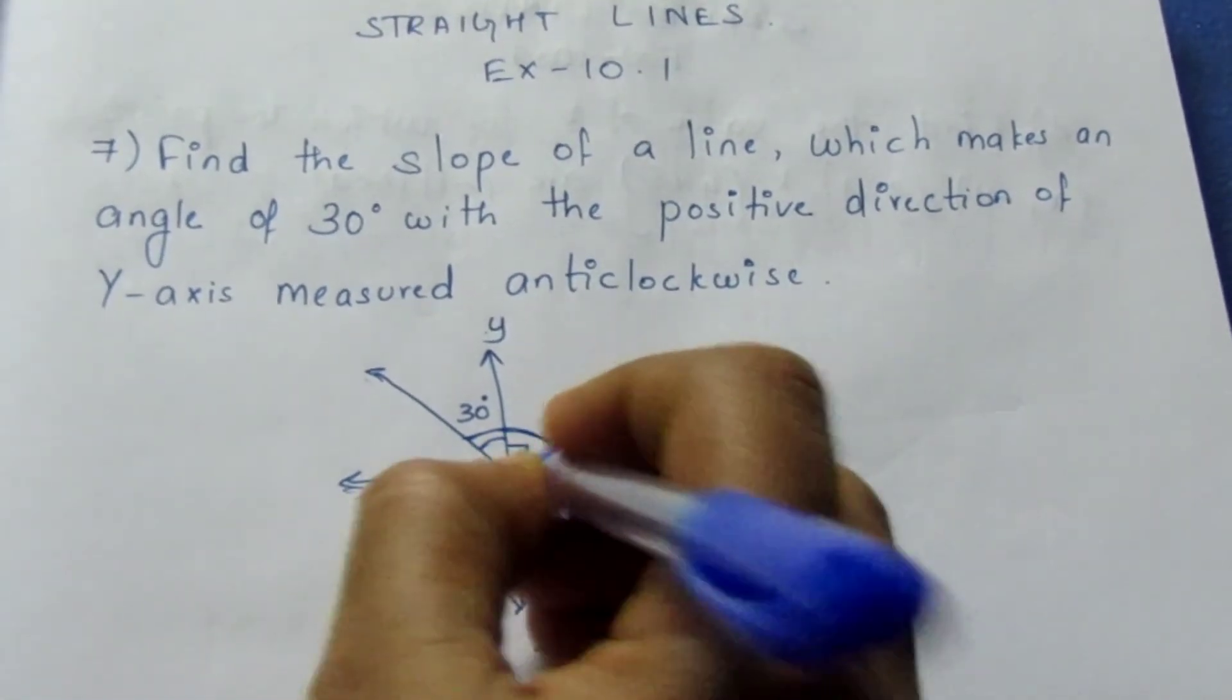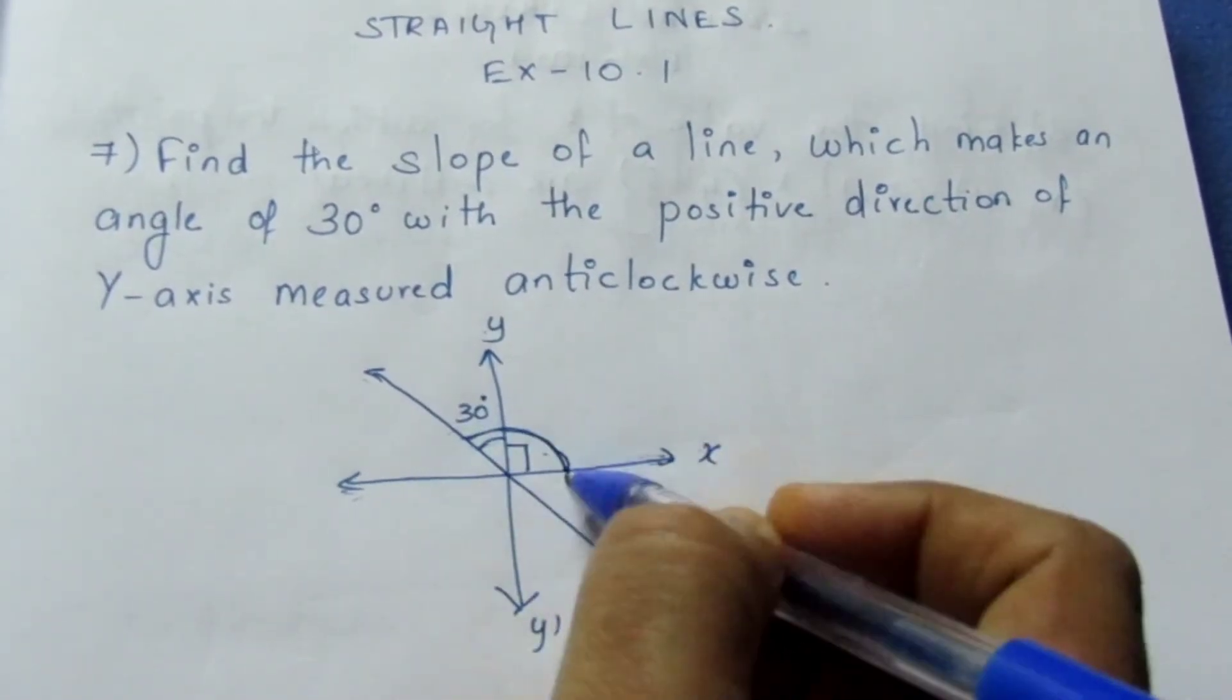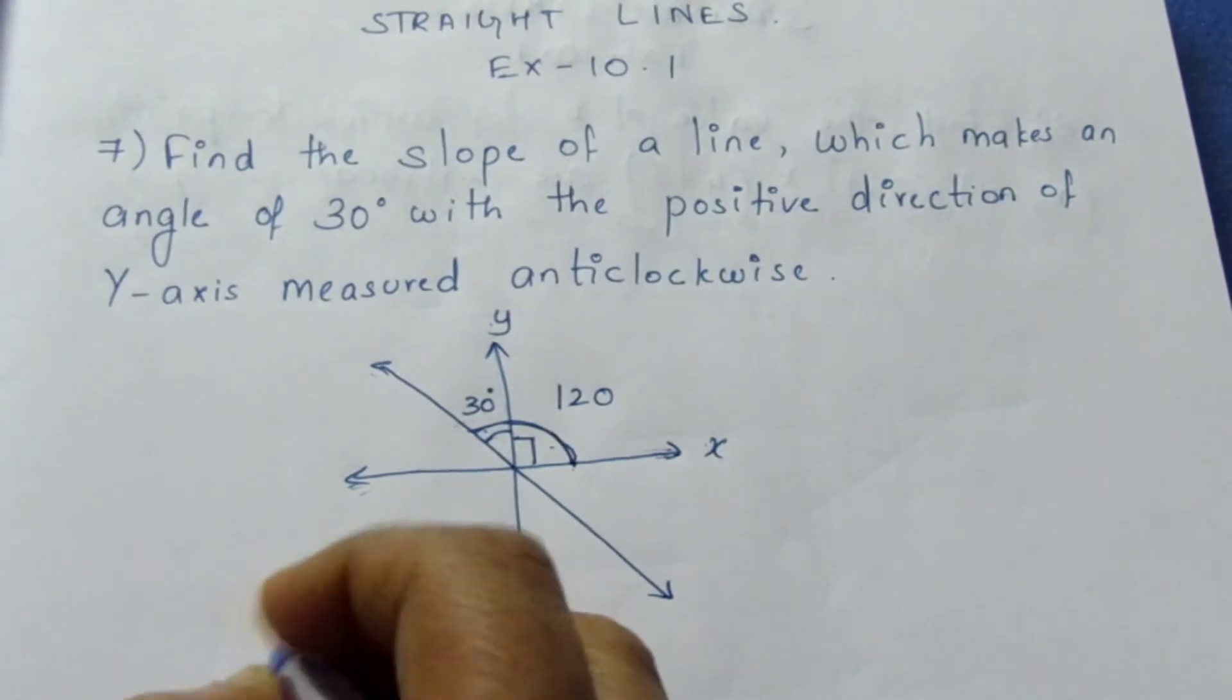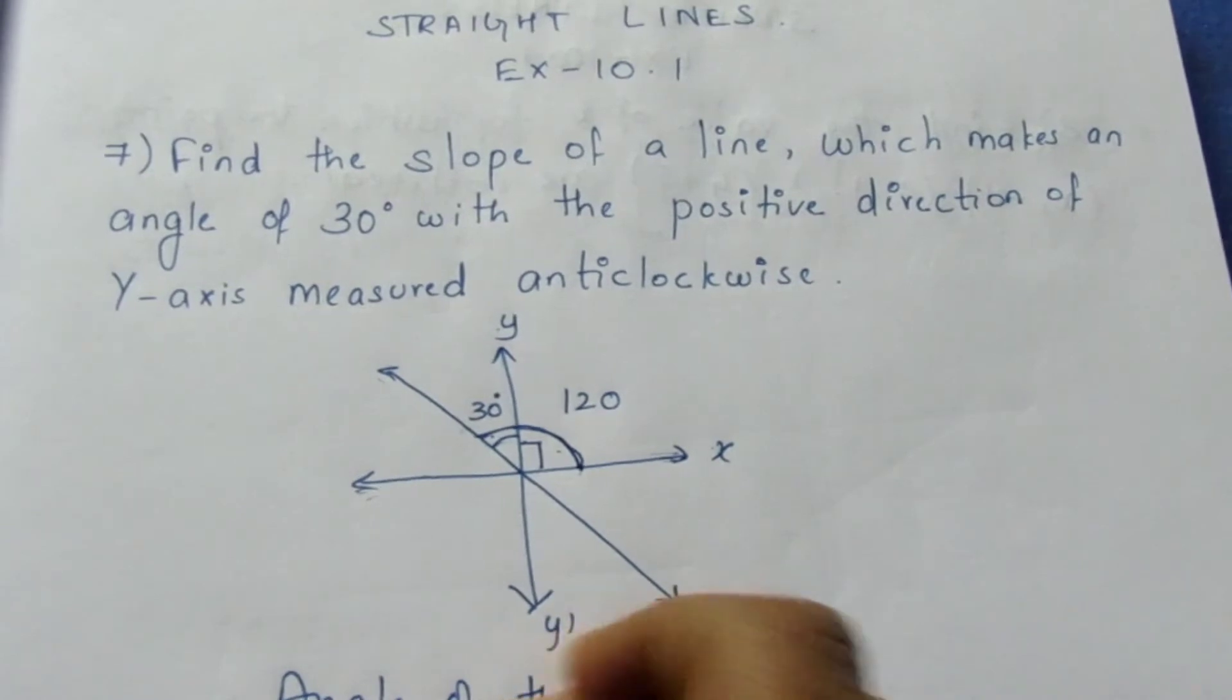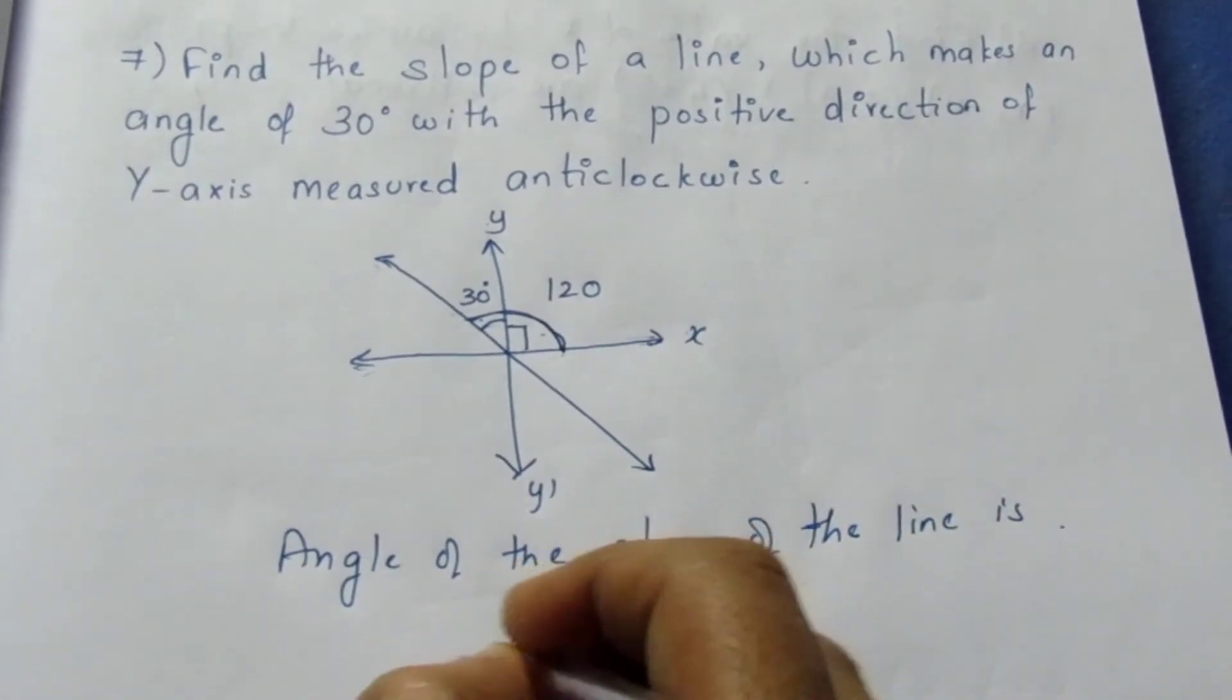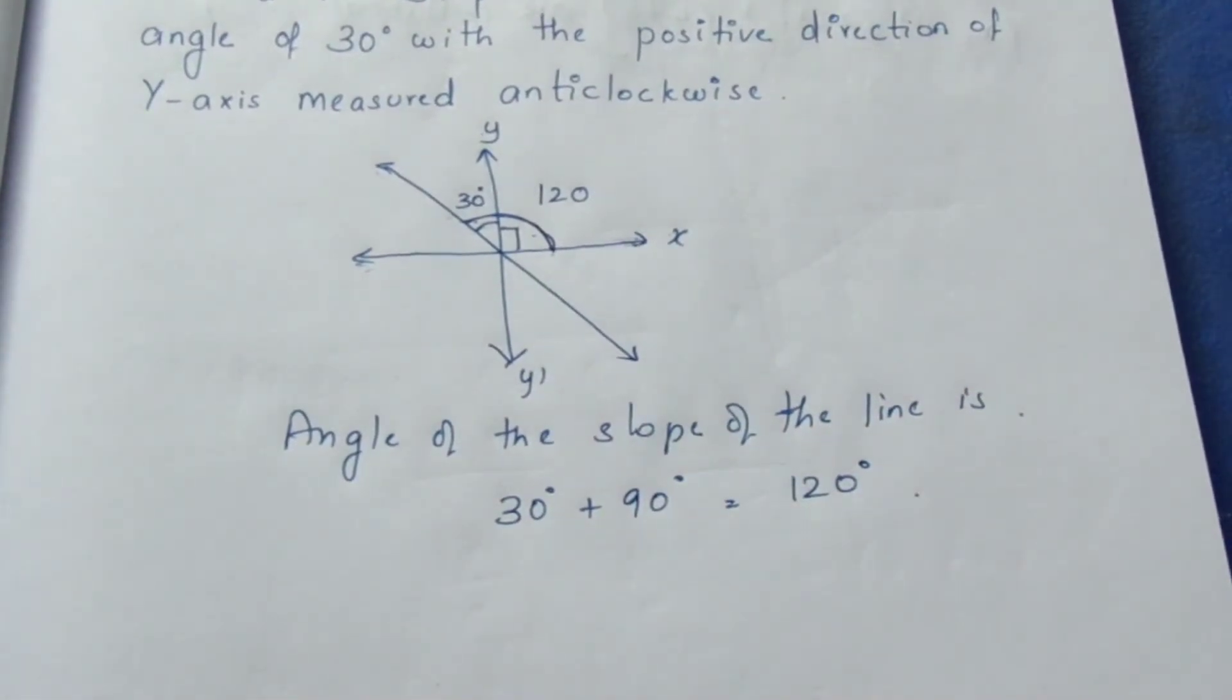So you know that this is 90 degree because of the perpendicular of x-axis and y-axis. So total angle will be 120 because of 90 plus 30. The angle of the slope of the line is 30 plus 90 degree which is 120 degree with the horizontal x-axis.